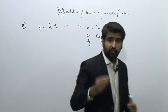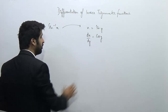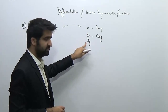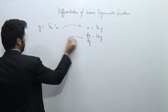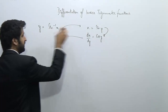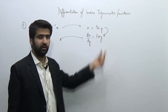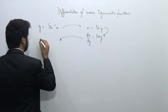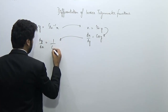Since we want dy/dx but we got dx/dy, we take the reciprocal. So dy/dx equals 1 upon cos y. The procedure is: first convert the inverse trigonometric function into a trigonometric function (x = sin y), differentiate it, then find the reciprocal to get dy/dx = 1/cos y.